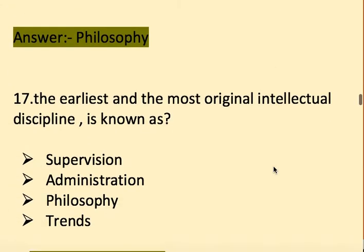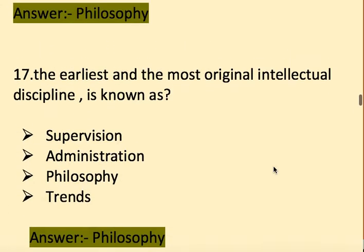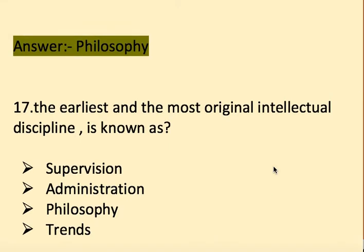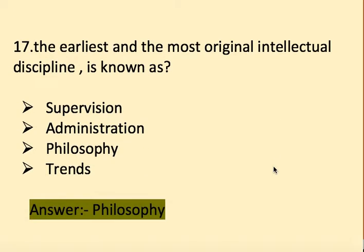Next question: The earliest and most original intellectual discipline is known as — options: supervision, administration, philosophy, and trends. The right answer is philosophy — philosophy is the earliest and most original intellectual discipline.